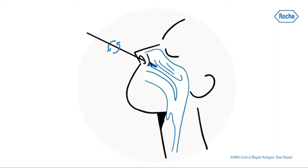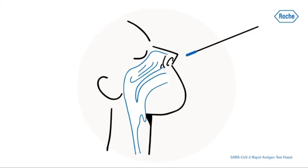Slowly rotate the swab in a circular path against the nasal wall at least four times for a minimum of 15 seconds. Repeat this with the same swab in the other nostril.